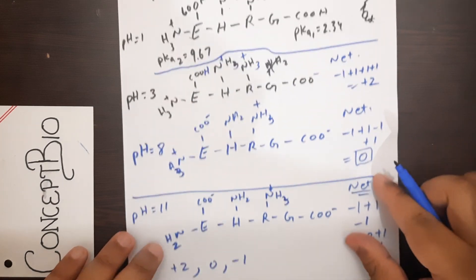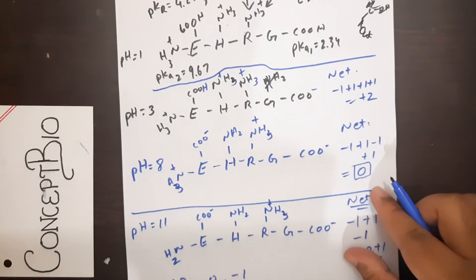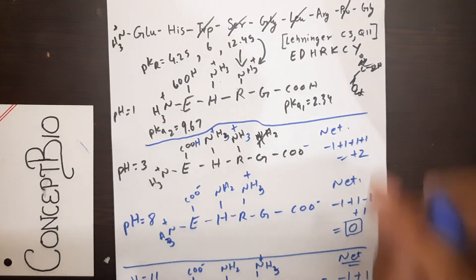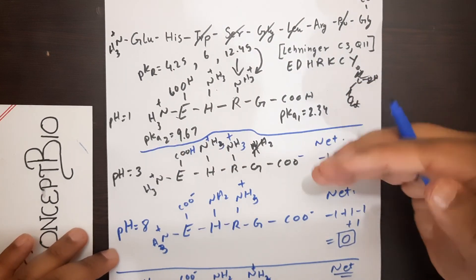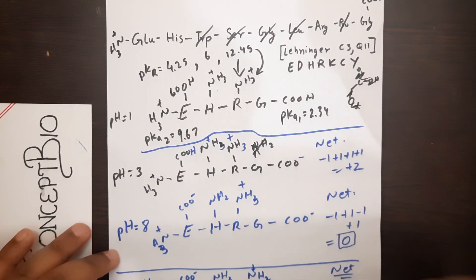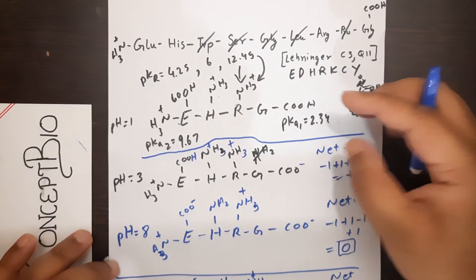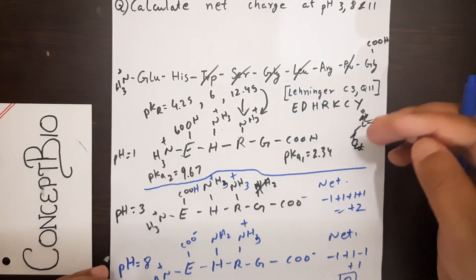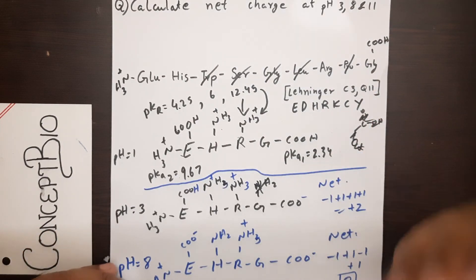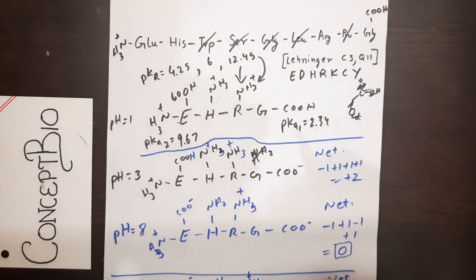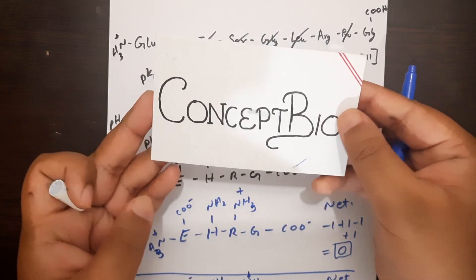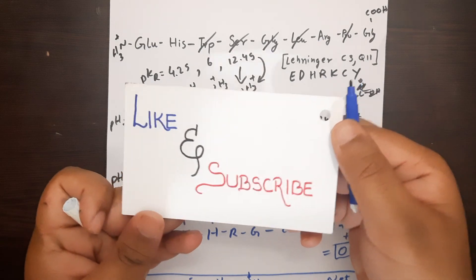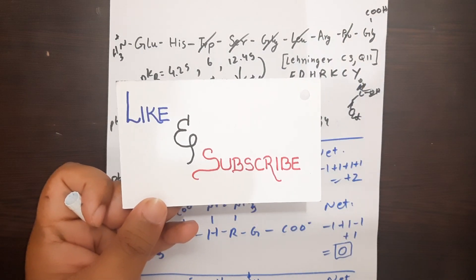So the answers for the Lehninger question are: at pH 3, net charge = +2; at pH 8, net charge = 0; at pH 11, net charge = −1. Just remember to start from pH 1, protonate everything, and slowly deprotonate each group as pH passes through each pKa value. I hope you understood — feel free to revisit the question and ask questions below. This has been ConceptBio — like and subscribe, thank you for watching!